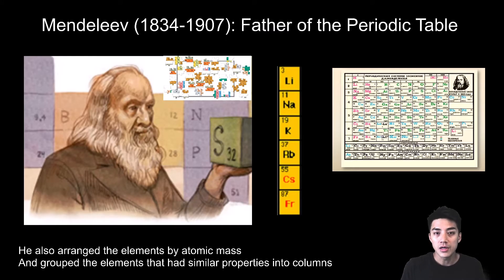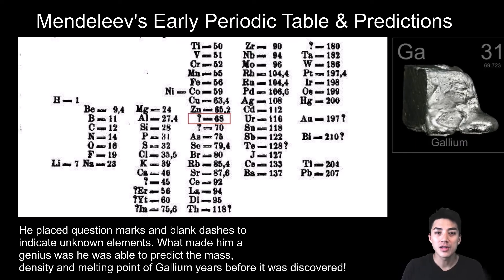Dmitri Mendeleev is known as the father of the periodic table. Not only did he arrange the elements by order of increasing atomic mass, he placed elements with similar physical and chemical properties into the same vertical columns known as groups and families. What set Mendeleev apart from other scientists was he was able to make predictions about unknown elements at the time. He left blanks and question marks on the periodic table, and he predicted the existence of gallium years before it was discovered.